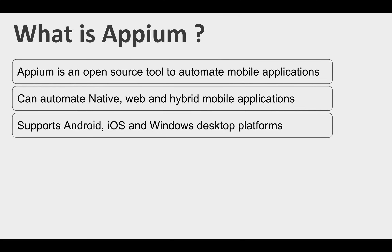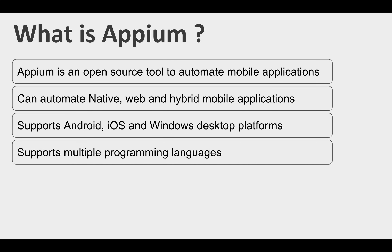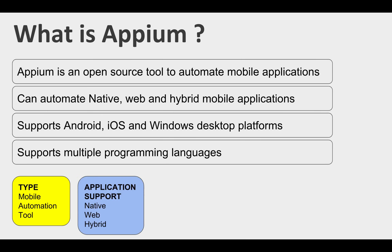Appium can also support Android, iOS, and Windows desktop platforms. We can also write Appium client scripts in multiple programming languages — I will discuss all of these. For now, this is exactly what you need to know about Appium for starting. If anybody asks you about Appium in an interview or generally, this is what you can say: it is a mobile automation tool, it supports native, web, and hybrid mobile applications.